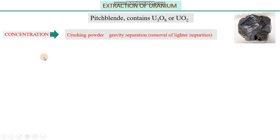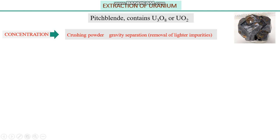How is it processed? In the first step, concentration is applied. Concentration is the process in which the concentration of the required species in the ore is increased. Since the rock contains a large amount of impurities, most of the contents will be impurities while only some will be uranium. In order to process it further, we have to increase the concentration of uranium. For concentration, we deal with the rocks physically, and the physical method is crushing of this rock.